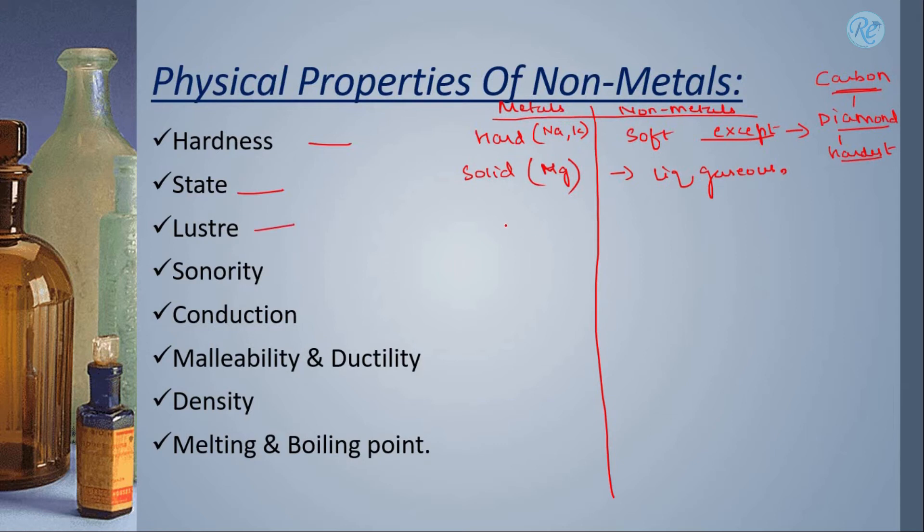Lustre, this is the property that metals have but non-metals do not have. Sonority, again, the property of striking sound is there with metals, not with non-metals.